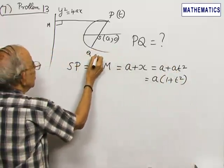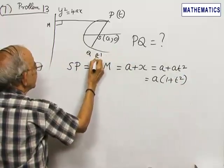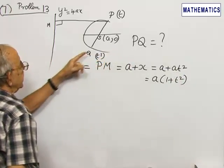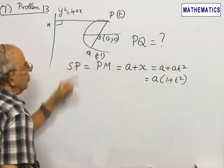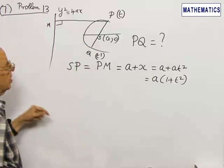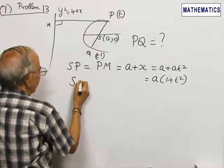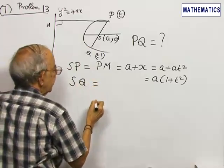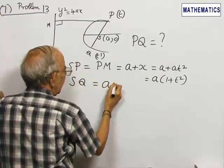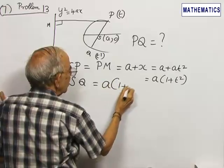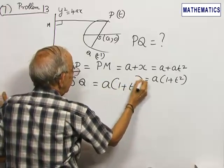Suppose t dash is the parameter of Q. By the same argument, SQ equal to a into 1 plus t dash squared.